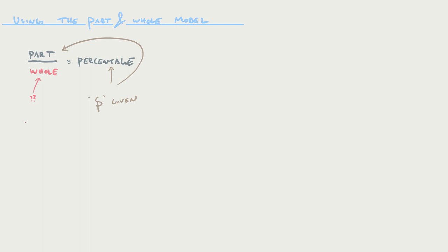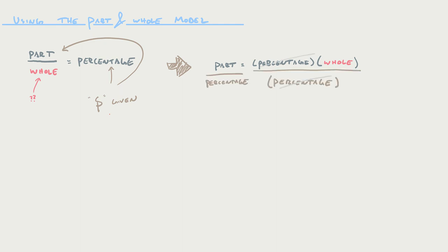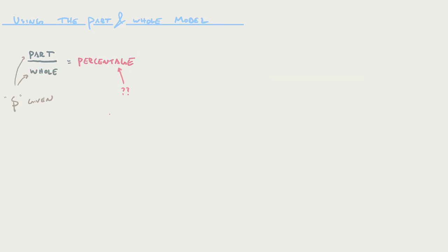What if we know the part and the percentage but not the whole? In this case I would multiply both sides by the whole to get it out of the denominator position on the left-hand side. Now it's in the numerator on the right-hand side being multiplied by the percentage. To undo that multiplication, we divide both sides by the percentage. So to find the whole, you take the part and divide it by the percentage. And of course if you're given the part and the whole, just do the division — the part and whole model already has the percentage isolated, so you just do the division to figure out what it is.